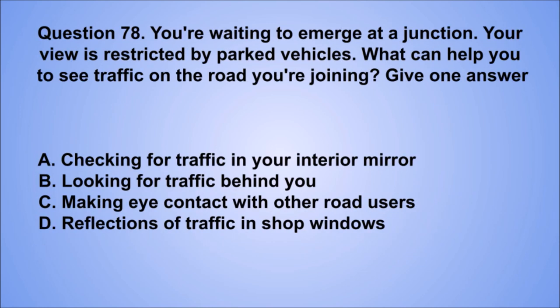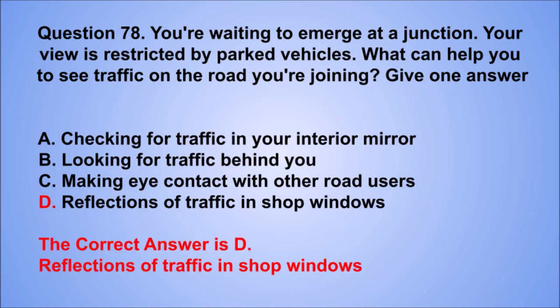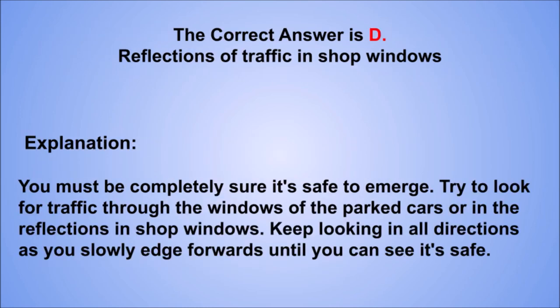Question 78. You're waiting to emerge at a junction. Your view is restricted by parked vehicles. What can help you to see traffic on the road you're joining? Give one answer. A. Checking for traffic in your interior mirror. B. Looking for traffic behind you. C. Making eye contact with other road users. D. Reflections of traffic in shop windows. The correct answer is D, reflections of traffic in shop windows. You must be completely sure it's safe to emerge. Try to look for traffic through the windows of the parked cars or in the reflections in shop windows. Keep looking in all directions as you slowly edge forwards until you can see it's safe.